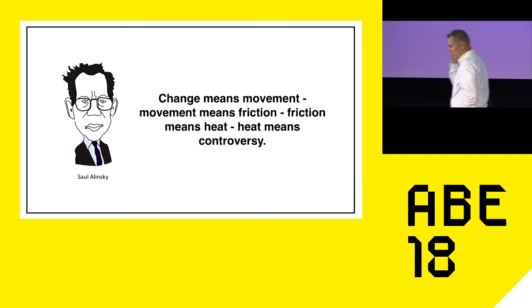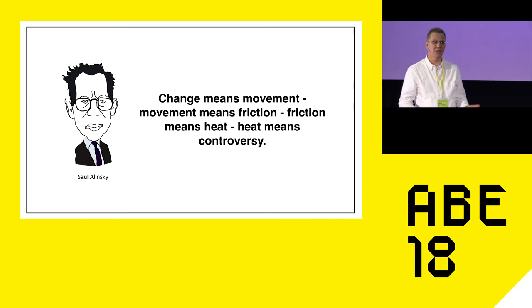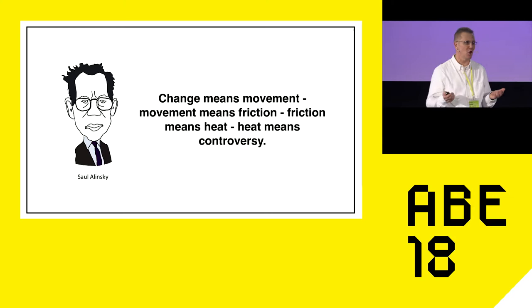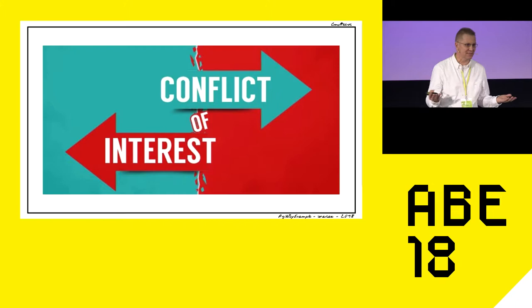Saul Alinsky, who wrote 'Rules for Radicals,' put this very clearly: change means movement, movement means friction, friction means heat, and heat means controversy. Whenever you go into an organization and start changing something, somebody will not necessarily like that change, and that will make conflict. In any larger organization or complex system, you will very quickly get conflict of interest.